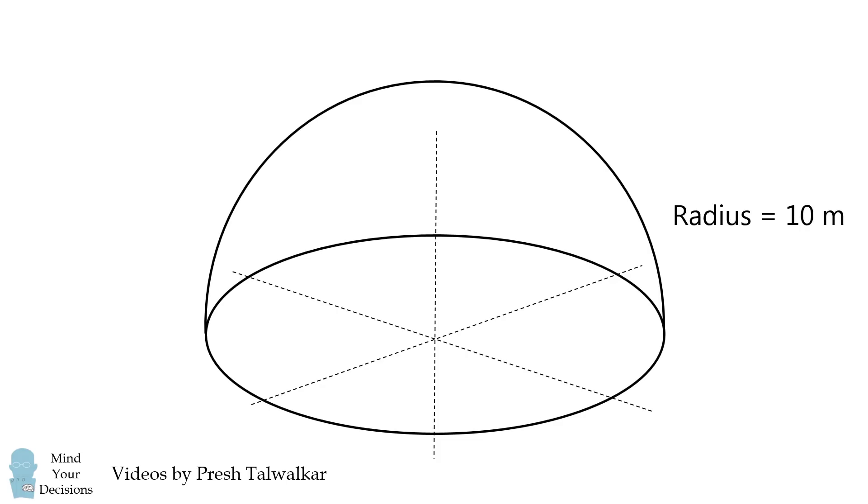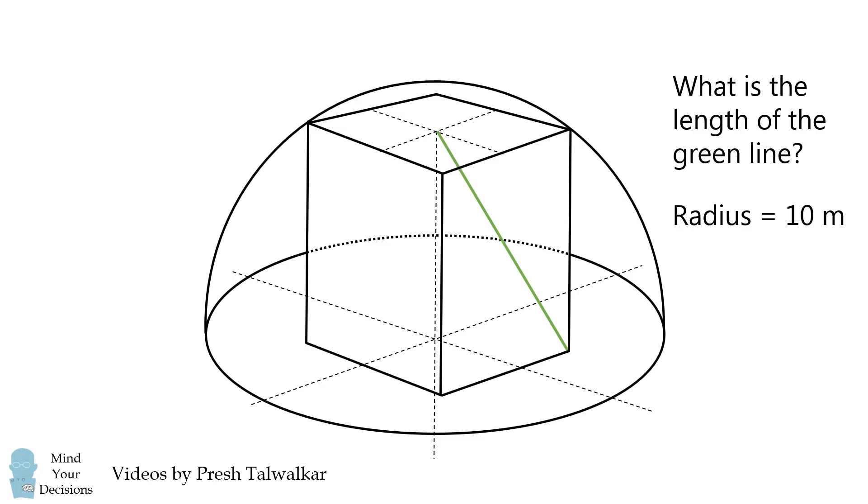Consider a hemisphere whose radius is equal to 10. Construct a cube whose bottom face has the same center as the hemisphere. Increase the size of the cube until the four corners of its top face are touching the hemisphere. Now construct a line segment from the center of its top face to a corner of its bottom face. What is the length of this green line?